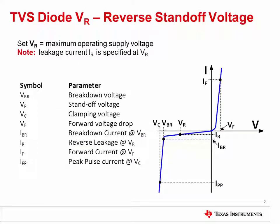Let's review some of the characteristics of TVS diodes given in EOS 1. The most critical spec for TVS selection is the reverse standoff voltage, VR. Looking at the IV characteristic on the right, we see that VR is the highest operating voltage of the TVS where it still has low leakage current IR, typically around 1 microamp. This is the off state for the TVS. If higher voltages are applied, the TVS will reach its reverse breakdown voltage, where it will turn on and limit voltage as well as conduct significant current. Finally, the clamping voltage VC is the voltage across the TVS where the peak pulse current, or IPP, is flowing. These three points on the IV curve are what we'll use to select a TVS.